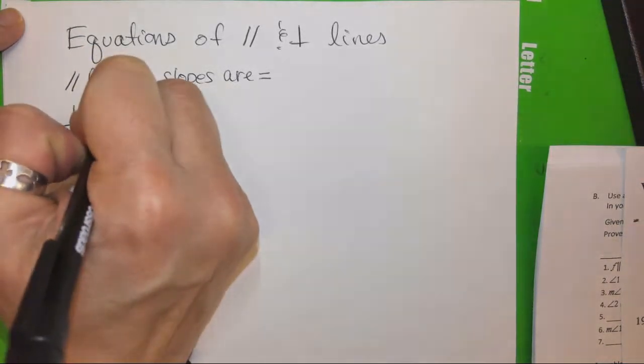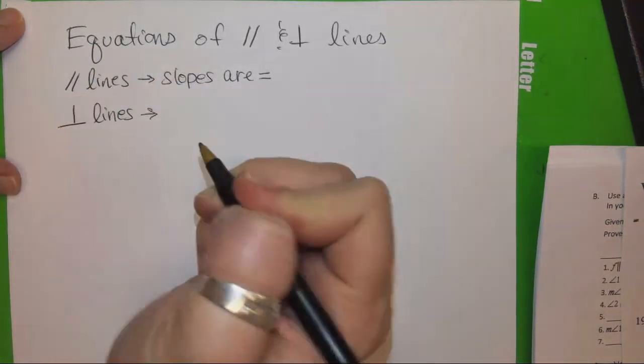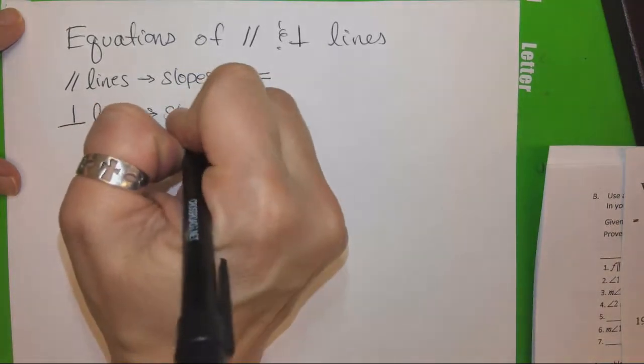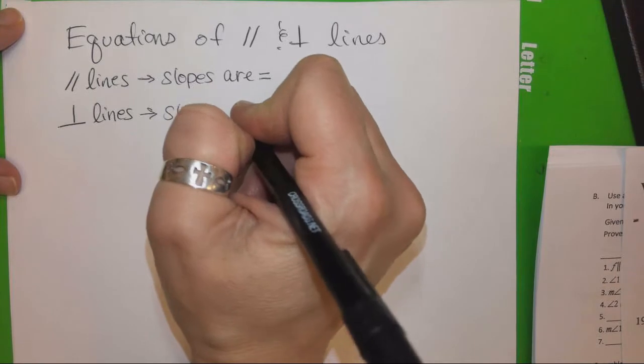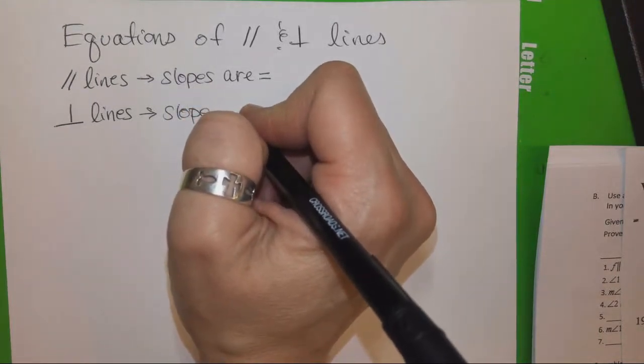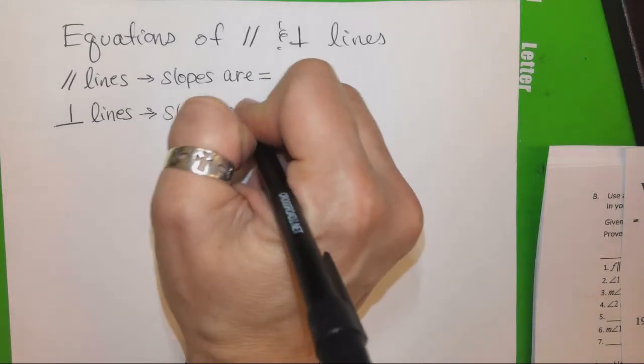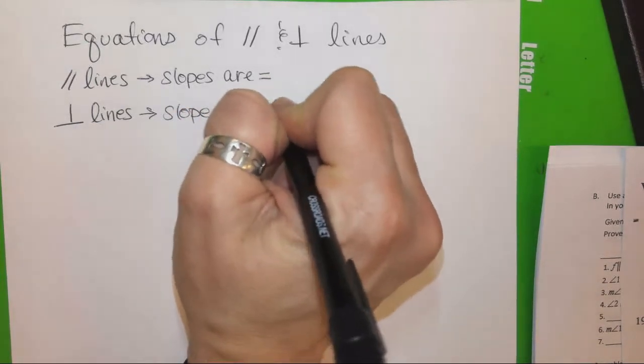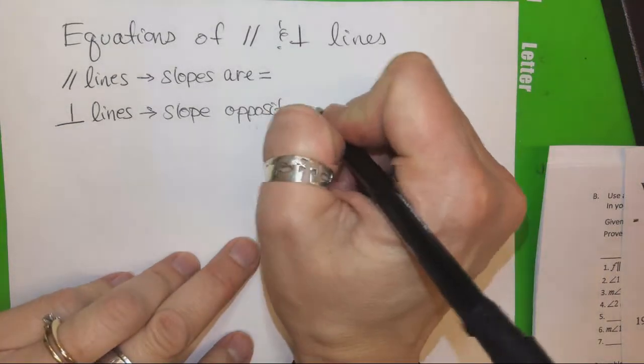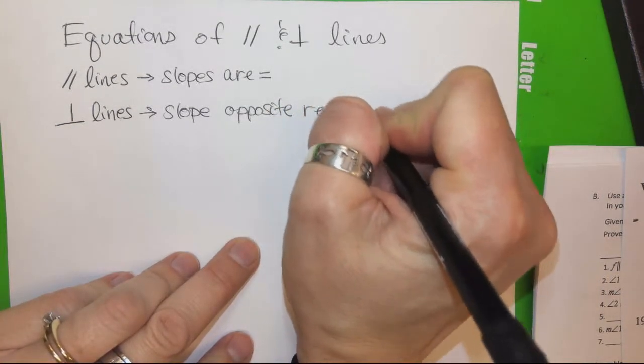Anybody remember perpendicular lines? They're opposite, and so opposite sign. Right, so it's the opposite sign, but it's also what? They're opposite, and maybe use the word opposite. So if I said one of the slopes is two-thirds, then what would be a perpendicular slope? Yes, so reciprocal, so opposite, reciprocal.